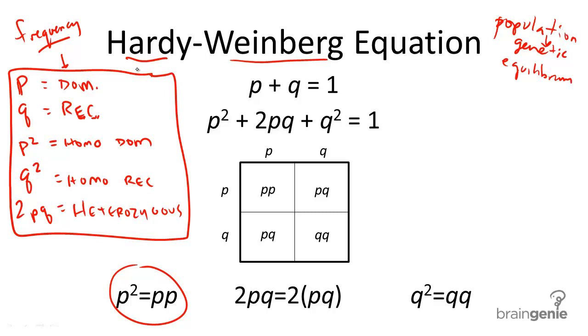So, what we need to also know is that in a population, the total frequency of dominant and recessive alleles, since there are only 2, must be equal to 100%. Therefore, this equation, p plus q equals 1, makes sense. They total up to equal the total amount of alleles that are possible in a population.